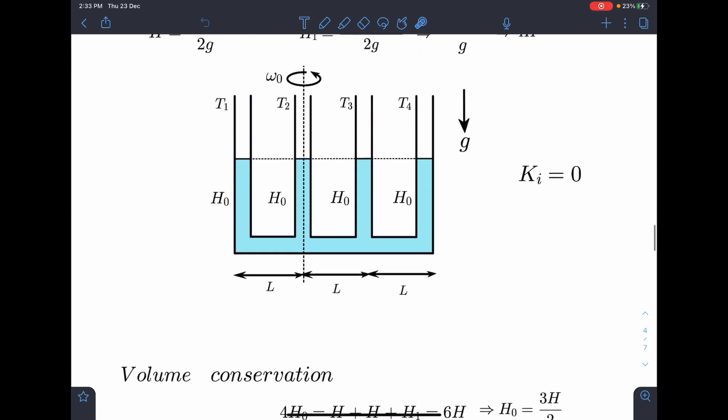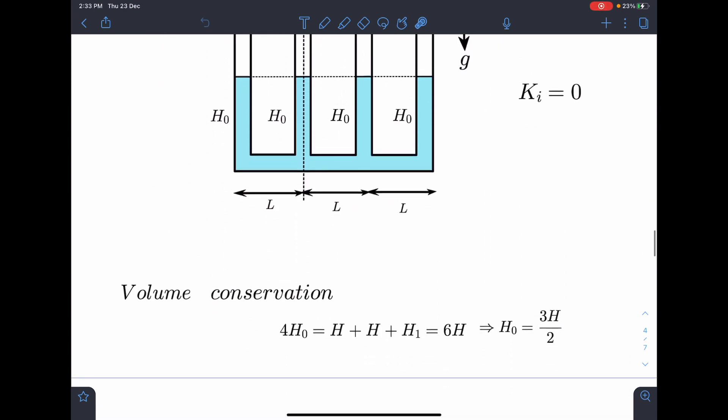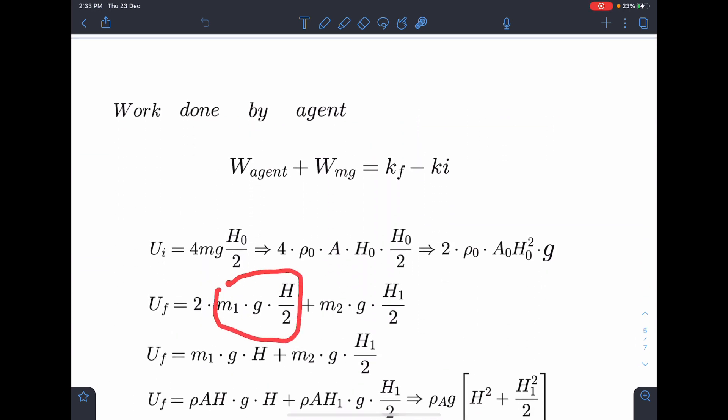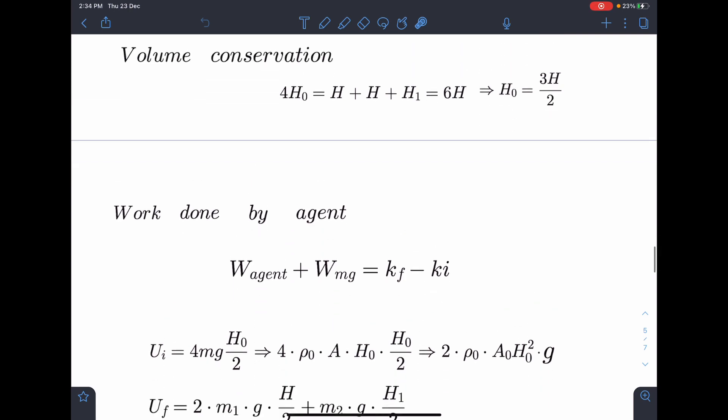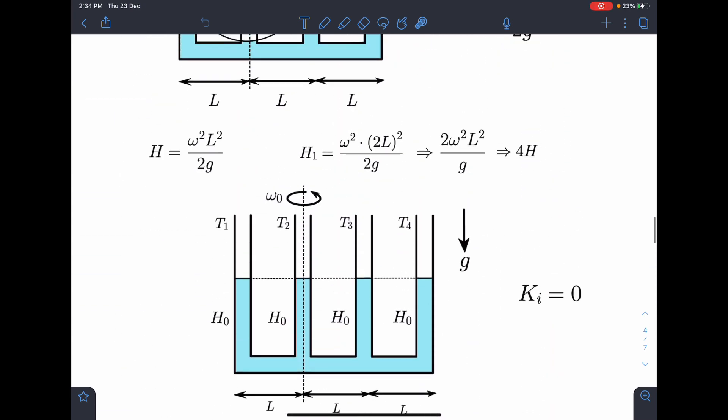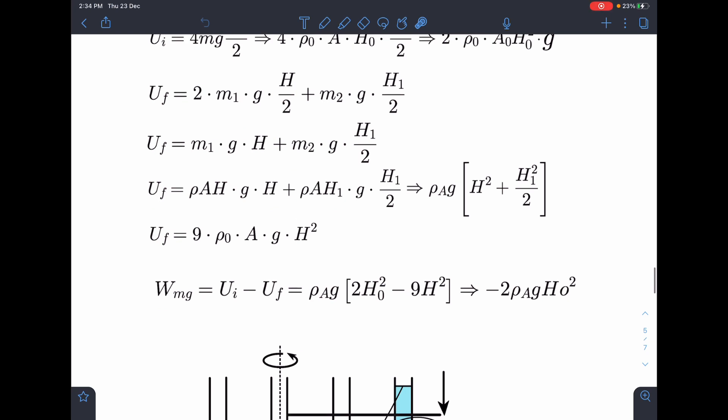Similarly, final potential energy, I can write for this part m1 g h by 2 plus m1 g h by 2. So it is like 2 times m1 g h by 2 and this will become some m2 g h1 by 2. So that is what I am writing here. 2 times, or you can say it is of one of the tubes, m1 into g into h by 2 and there are 2 such tubes. So double of that and m2 g h1 by 2. Now I know these values. I can substitute here m1 is rho A h into g into h and m2 is rho A h1 into g into h1 by 2. So I am going to get this as rho A g h square plus h1 square and when I substitute the value of h1 in terms of h, you can see h1 is 4h.